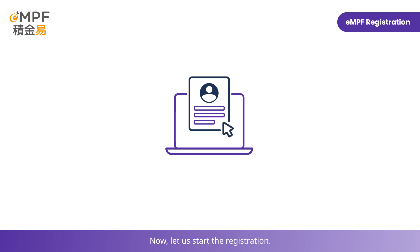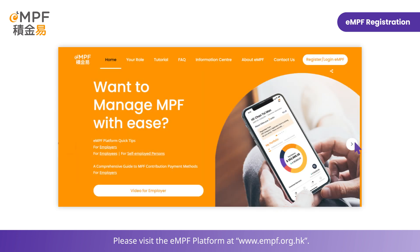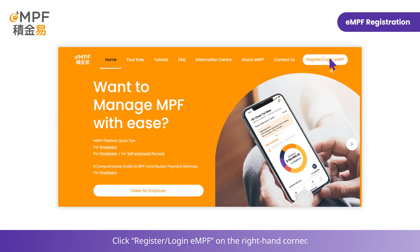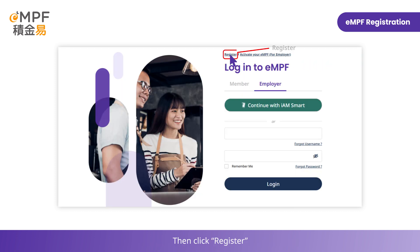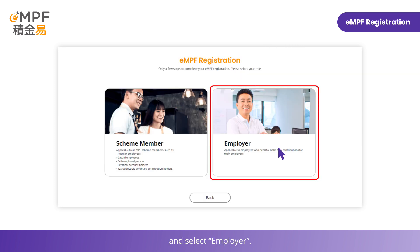Let us start the registration. Please visit the EMPF platform at www.empf.org.hk. Click Register, then log in to EMPF on the right-hand corner. Then click Register and select Employer.